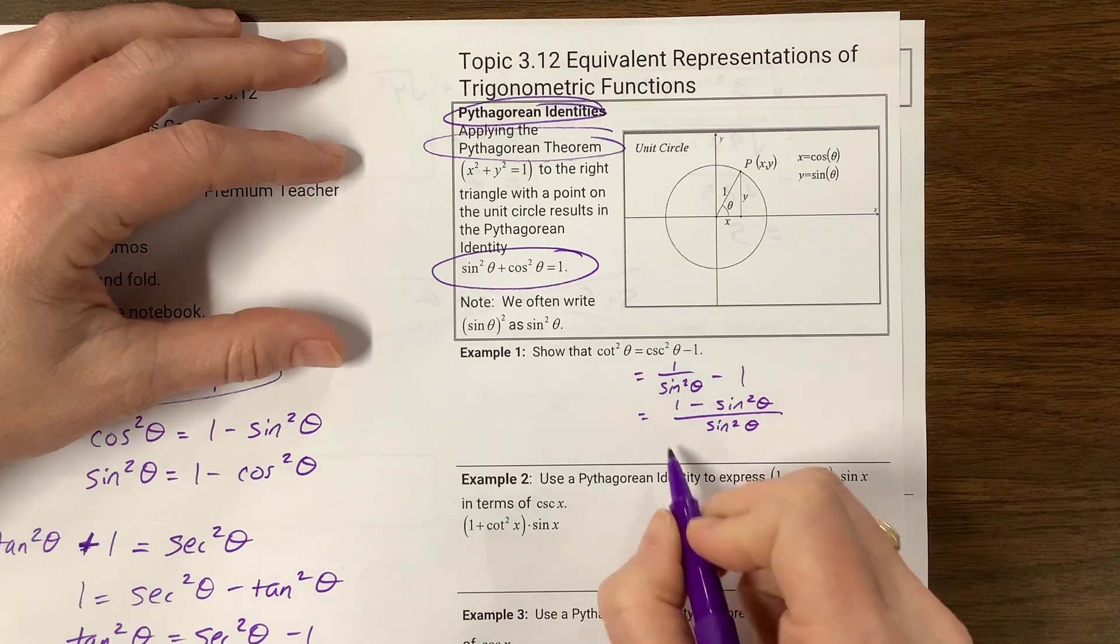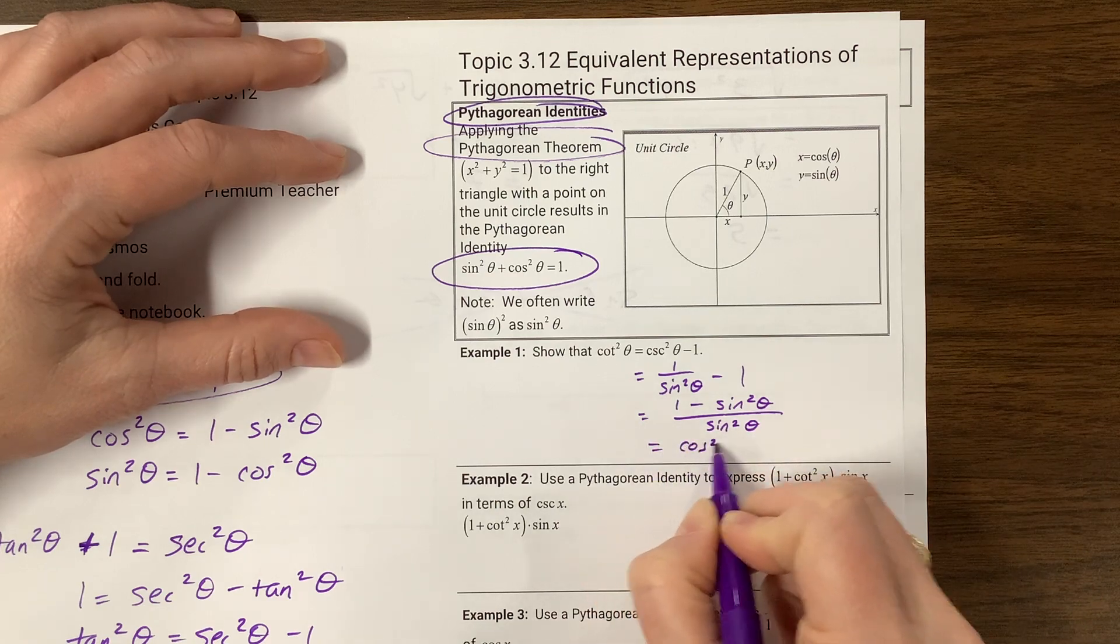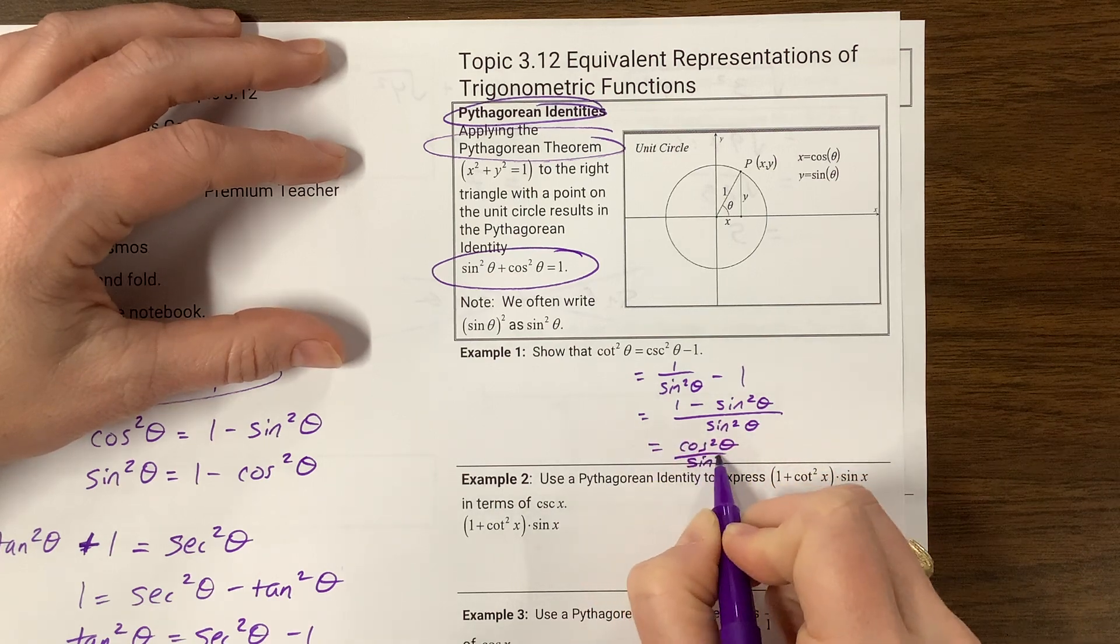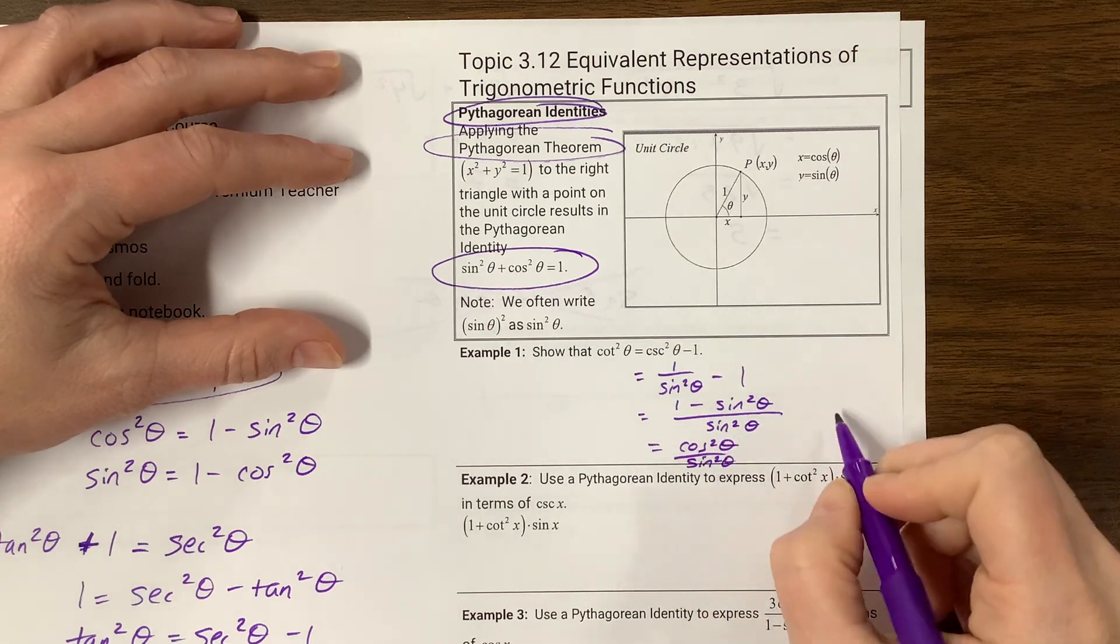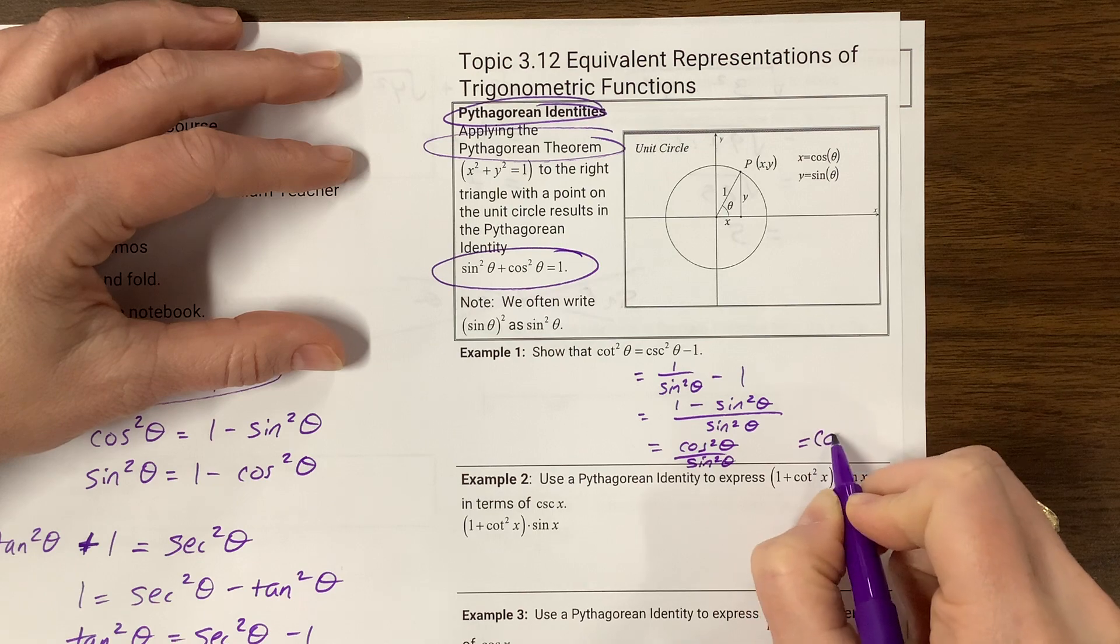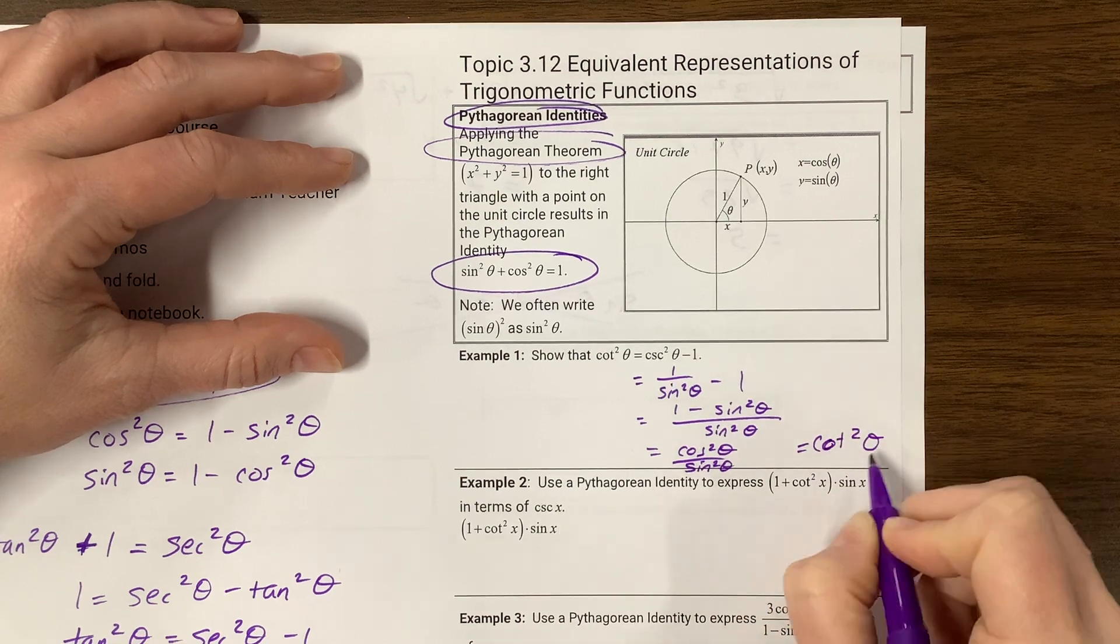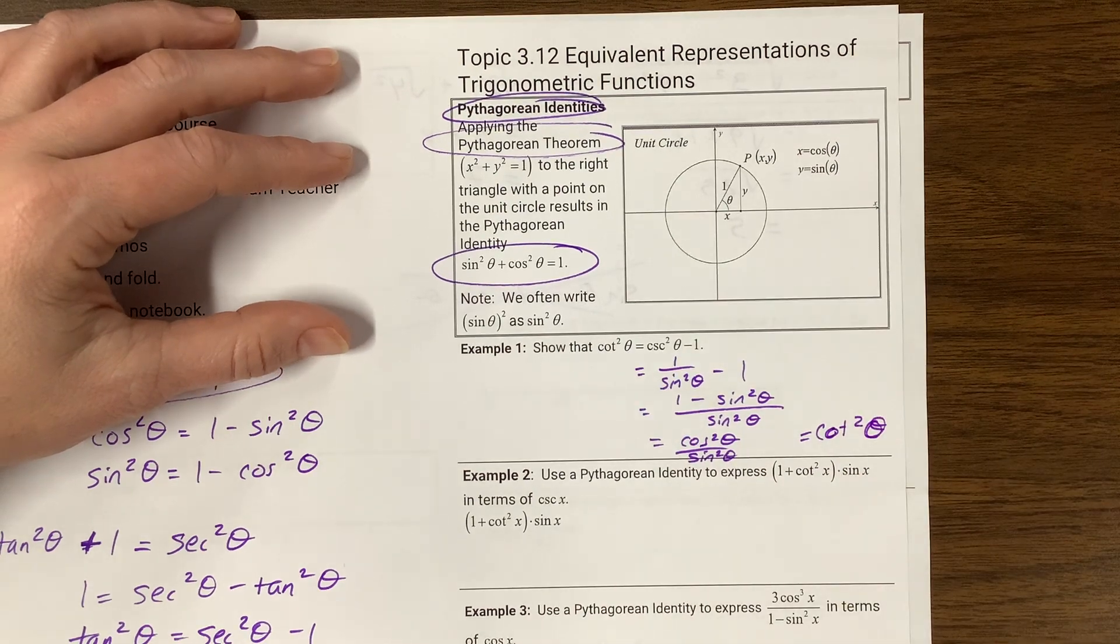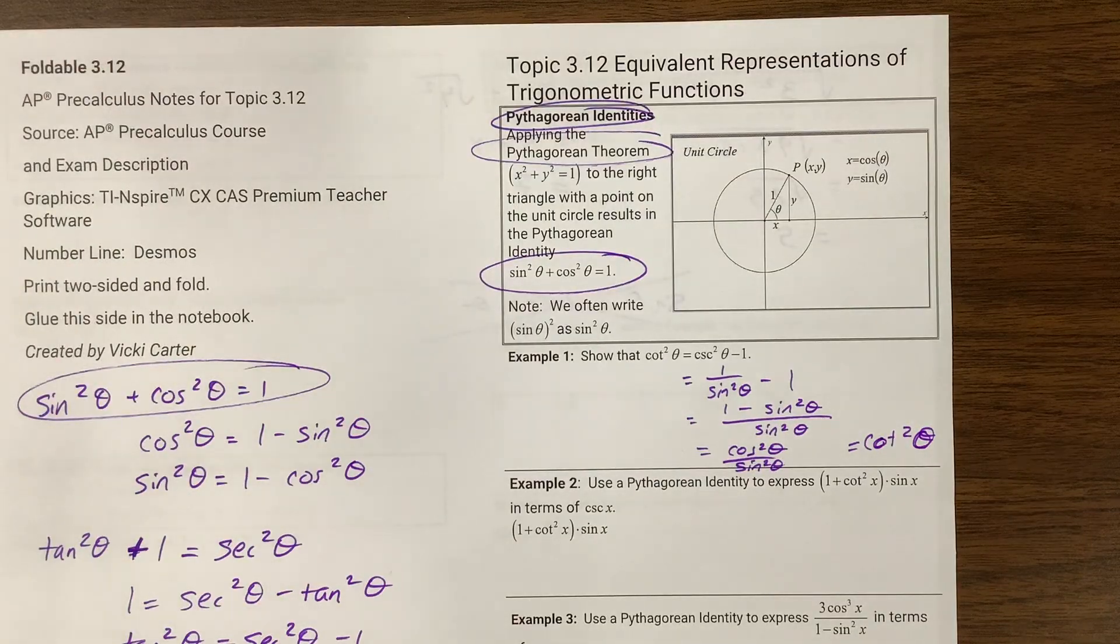Then we could say this is one minus sine squared theta over sine squared theta. One minus cosine squared theta is equal to cosine squared theta over sine squared theta. There is not enough room here. Cosine over sine is cotangent. And so this equals cotangent C, O, T, squared theta. There we go. Something like that would be what I would expect you to do for a proof.